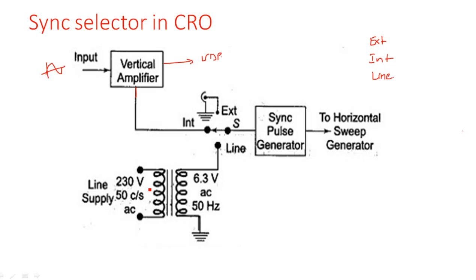Line supply is nothing but the AC voltage given to energize the electron gun — about 6.3 volts AC supply. This 6.3 volts is generated by stepping down: 230 volts (the plug/house AC voltage) is stepped down to 6.3 volts AC at 50 Hz. This 6.3 volts is taken as the line supply for the switch. The internal signal comes from the output of the vertical amplifier, and we can also provide an external signal.